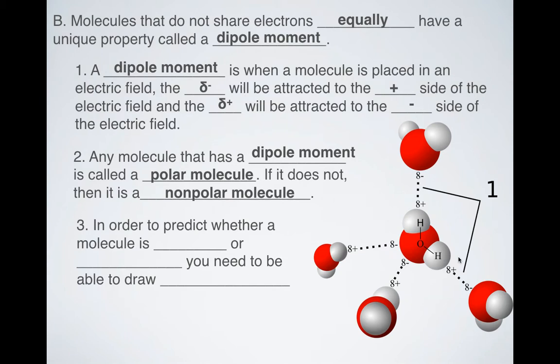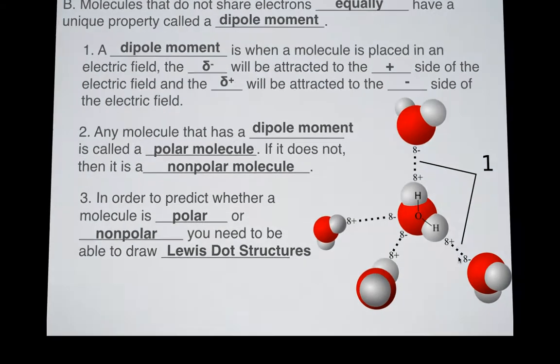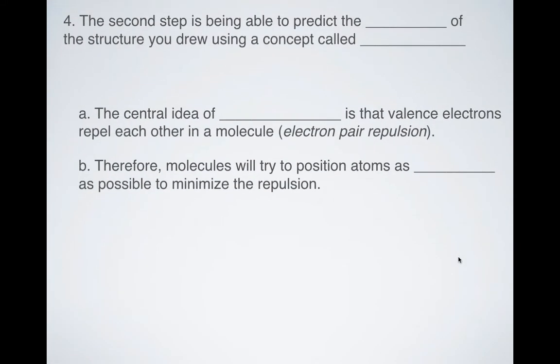So when scientists use the term polar or nonpolar, that's really what they're getting at. Polar things are attracted to electrical fields. Nonpolar things are not attracted to those electrical fields. In order to predict whether a molecule is polar or nonpolar, you need to be able to draw the Lewis dot structures for them, right? So that means that all that work we've been doing has an actual point. Now, the second step, if you want to know if something's polar or nonpolar, you have to be able to predict the geometry of the structure using a concept called VSEPR theory.